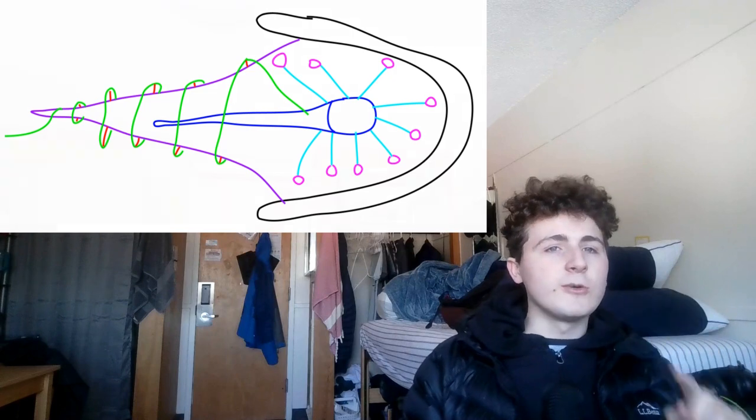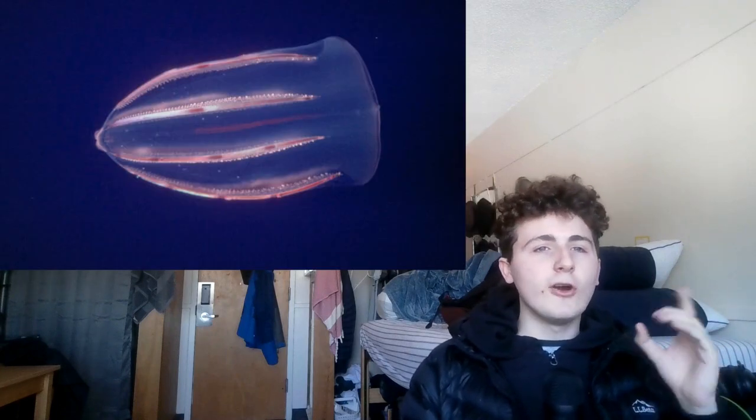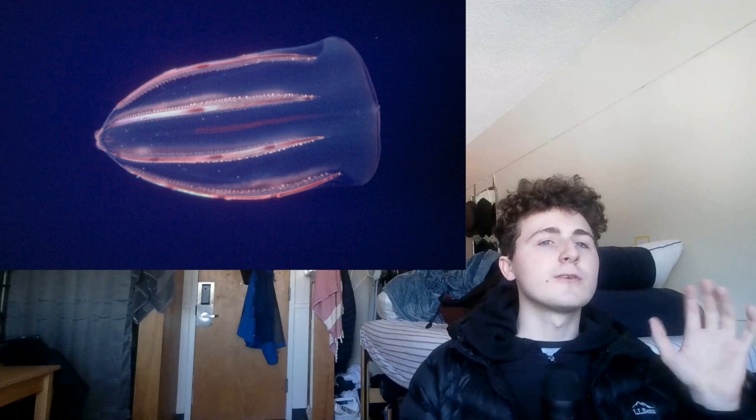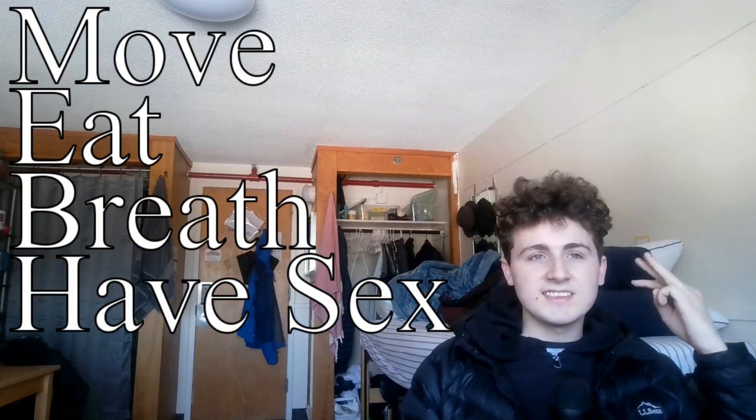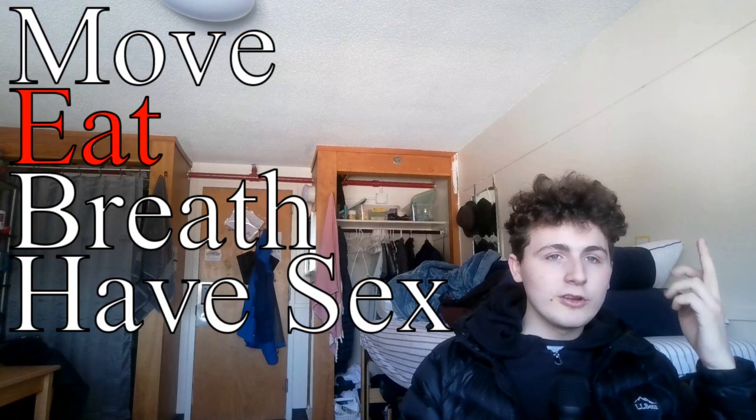That's what's called a coloblast, and it's a unique cell found in comb jellies, which are these jellyfish-like blobs that just sort of float around and do nothing. Well, that's not true. They, like all metazoans, big word, the comb jellies move, eat, breathe, and have sex. These guys help with goal number two.